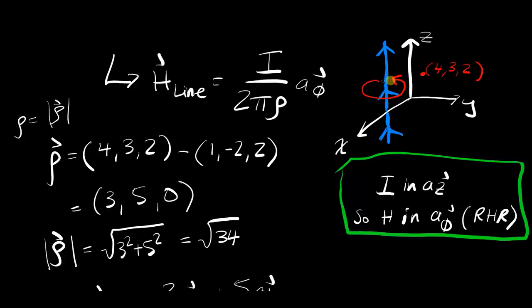And you can deduce that by using the right-hand rule. So if you stick your right thumb in the direction of the current, which is straight up in front of you, if you try to curl your fingers into a fist, you'll see that your fingers curl in this direction. And that's the direction of a phi. That's the direction of the magnetic field.